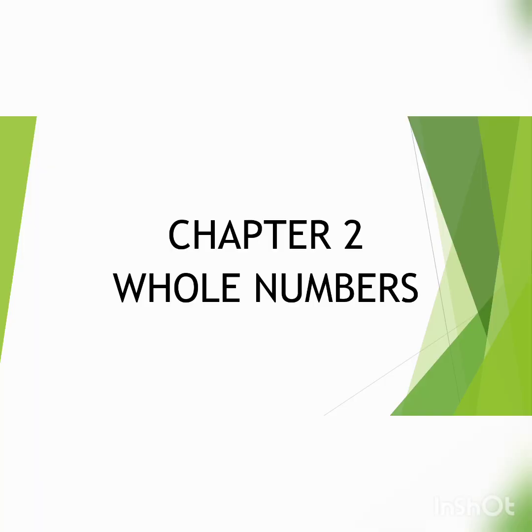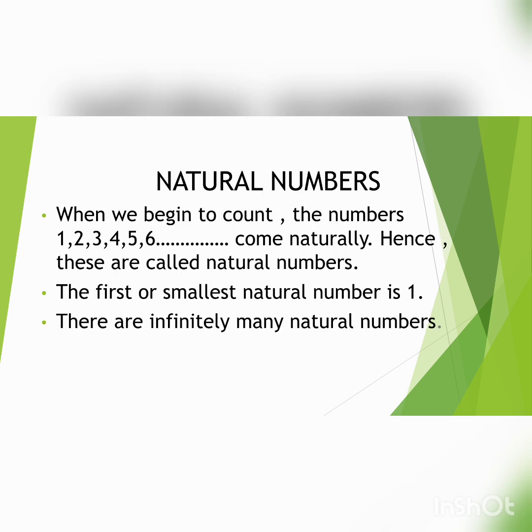Now I will start with chapter 2, that is whole numbers. Natural numbers: when we begin to count the numbers 1, 2, 3, 4, 5, 6, and so on come naturally. Hence, these are called natural numbers. The first or smallest natural number is 1. There are infinitely many natural numbers.